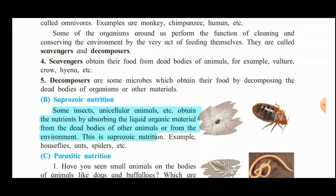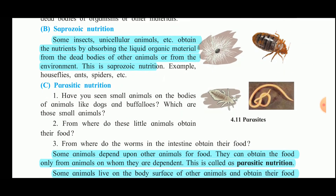Saphrozoic nutrition is when some insects and unicellular animals obtain nutrients by absorbing liquid organic material from the dead bodies of other animals or from the environment. For example, houseflies and spiders exhibit saphrozoic nutrition.